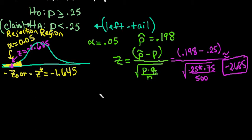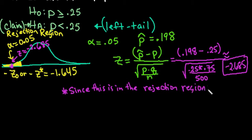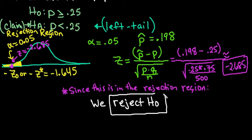When it's directly in the middle, I don't like to round. But we can see that it falls in the rejection region. So since this is in the rejection region, our decision is going to be that we will reject the null hypothesis. You always either reject the null or fail to reject the null. So our decision that we made is that we reject the null hypothesis.